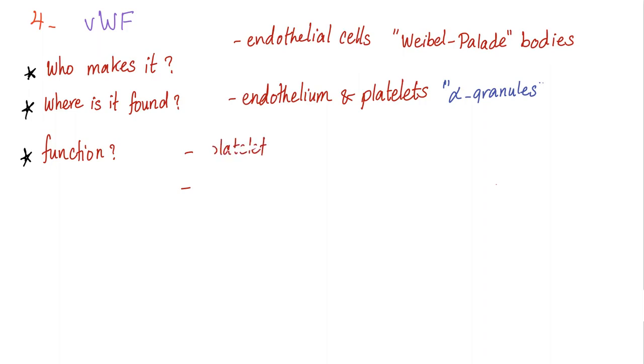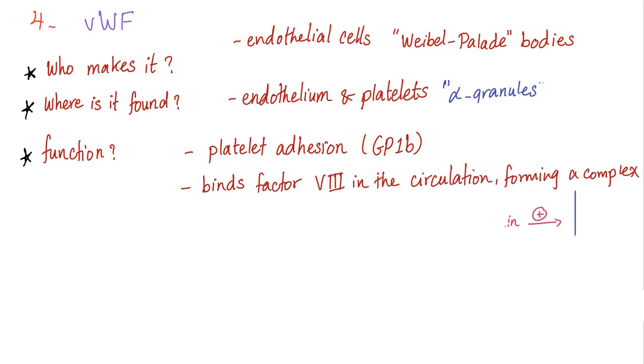What's the function of this von Willebrand factor? First, platelet adhesion. What's the receptor? Glycoprotein 1b. And also, it binds factor VIII in the circulation, forming a complex. Then thrombin activates factor VIII into factor VIIIa. Common pathways on, fibrin, boom.